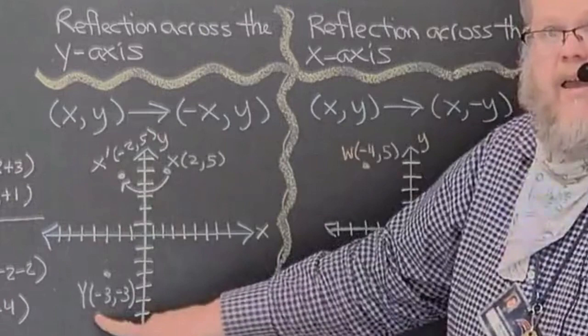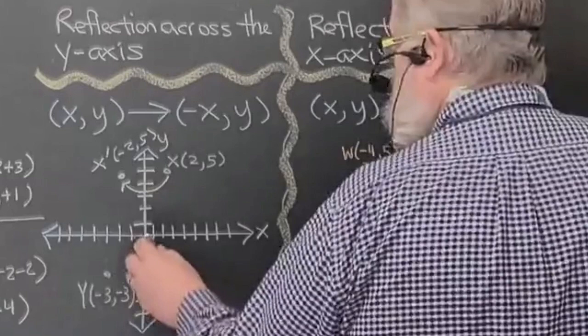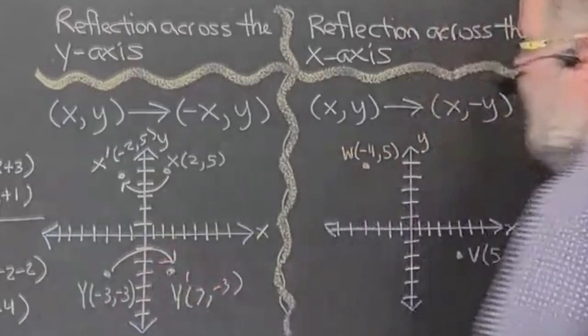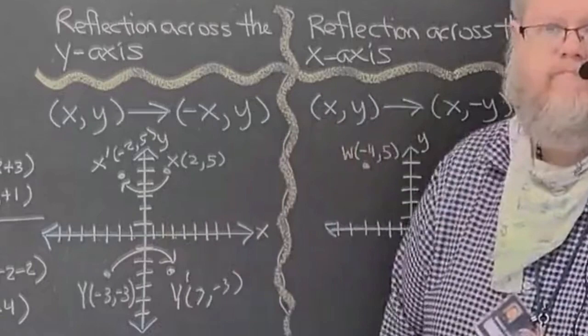Here's Y at negative three comma negative three. If I change the x value from negative three to positive three, that becomes three comma negative three — Y prime, a reflection across the y-axis. So to reflect across the y-axis, simply change the sign of the x-coordinate.